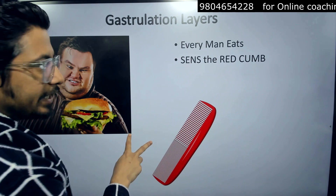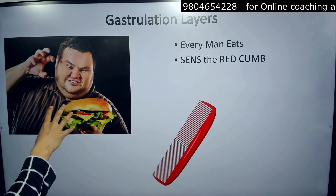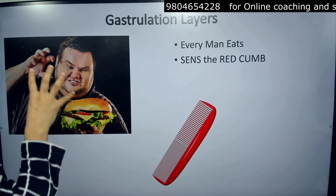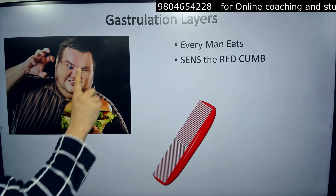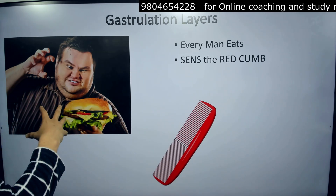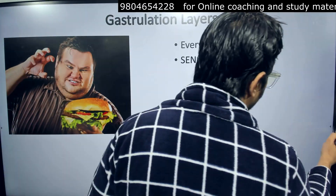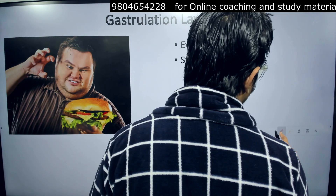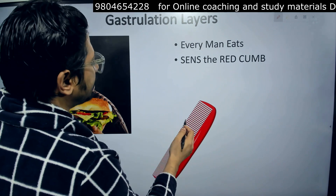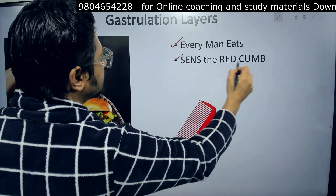We have two simple sentences for you. The first uses this image — I purposely use this image, I don't want to offend anyone for any body shaming — to let you know: 'Every man eats.' A person who eats is going to go for food like this. So, every man eats. The second sentence is: 'Sense the red comb.' A red colored comb — you know a comb, all of us have used it. So, first is 'every man eats' and second is 'sense the red comb.'